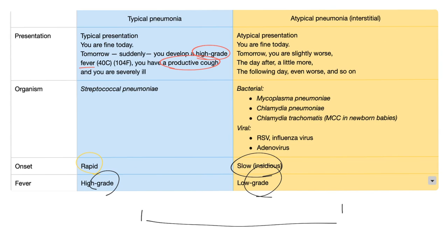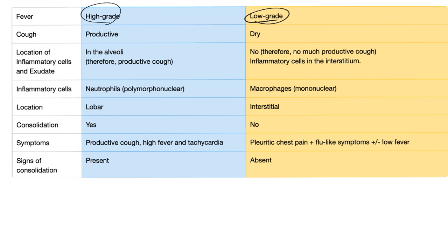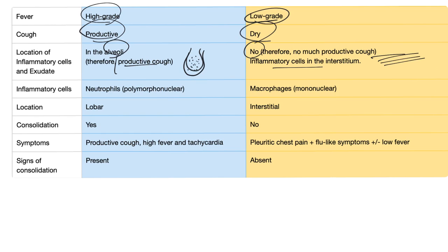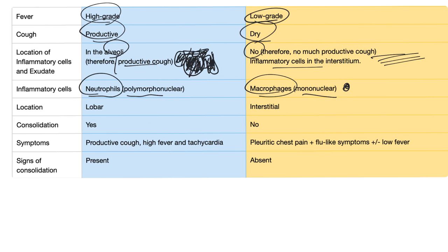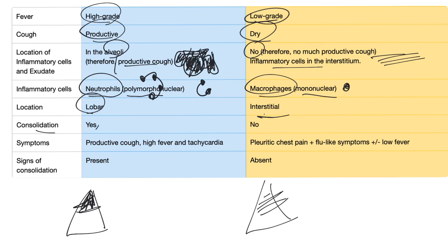All of this is archaic and has nothing to do with the real world. Fever is high-grade in typical, low-grade in atypical. Cough: productive in typical, dry in atypical. In typical pneumonia the exudate is in the alveoli, therefore you have consolidation and productive cough. In atypical it's in the interstitial space — so no consolidation and no productive cough. Consolidation occurs when there is exudate inside the alveoli; with millions of alveoli filled with exudate, the lung essentially becomes solid. The inflammatory cells in typical pneumonia are neutrophils, also known as polymorphonuclear. In atypical they are macrophages, also known as mononuclear. Location: an entire lobe of the lung in typical; interstitial streaky fibrosis in atypical. Consolidation: present in typical, absent in atypical.